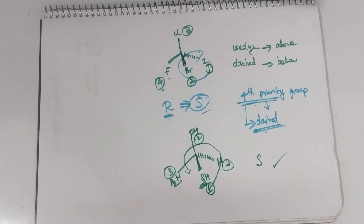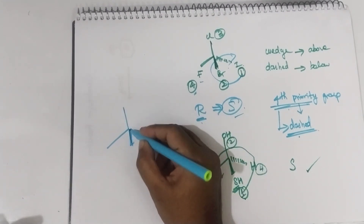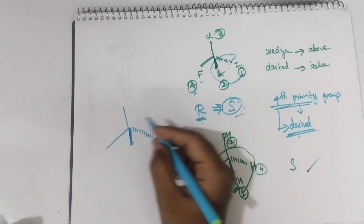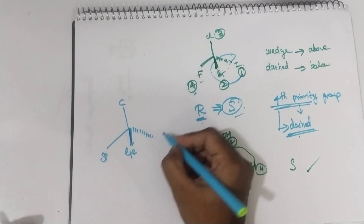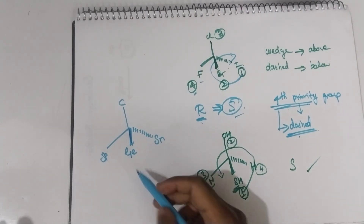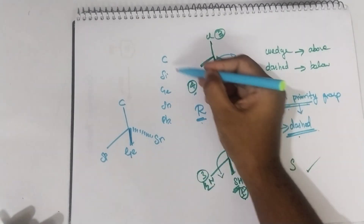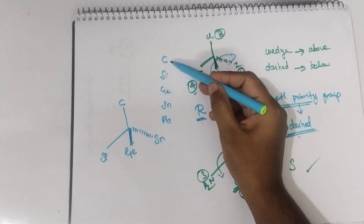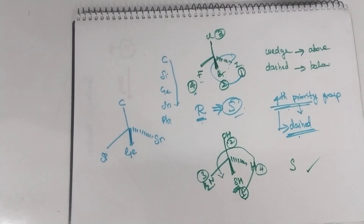Now I will give you one example — you have to find out the configuration and share your answer in the comment section. The substituents are carbon, silicon, germanium, tin, and lead. This is very simple — I have given you the carbon family as a hint. Going down the group, the atomic number increases. Just find out the configuration and share your answer in the comment section.